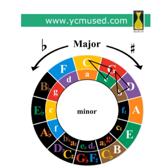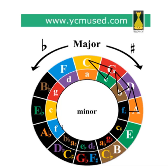For D major, the root position triad is D, F sharp, and A. This pattern can be used all around the circle. So for example, the A-flat major root position triad is A-flat, C, and E-flat.